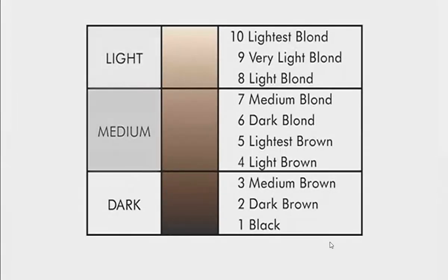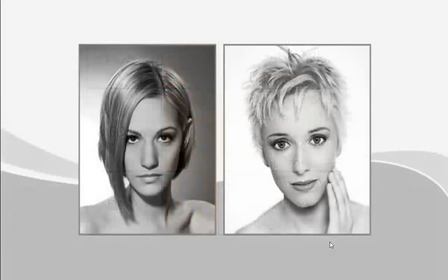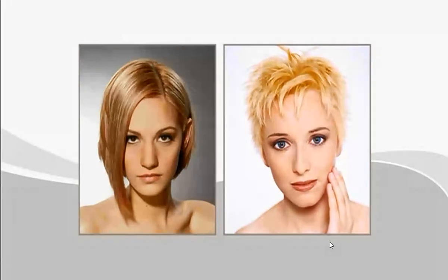These fields are light, medium, and dark — or blonde, brown, and black — and can be further subdivided into medium dark and medium light. Once you have identified the level and field, you can further describe the natural tone of the hair color as either warm or cool. For example, a level 8 blonde can be described as a level 8 warm golden blonde or a level 8 cool ash blonde.